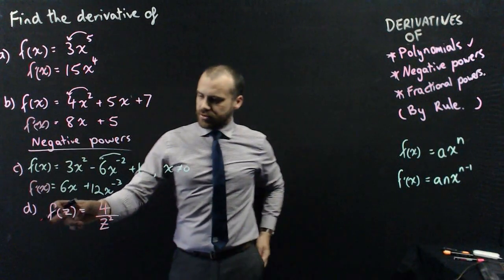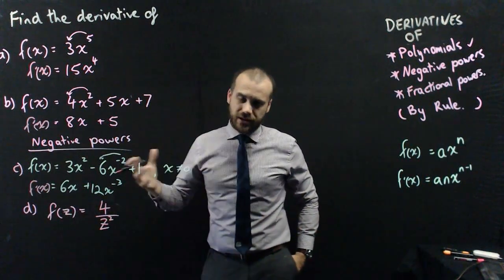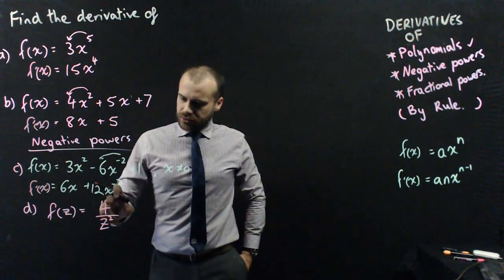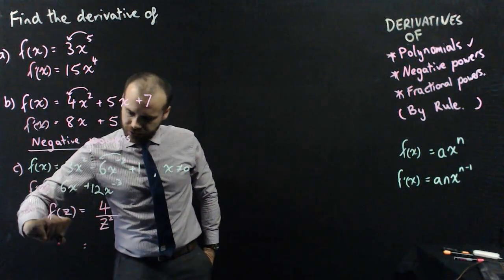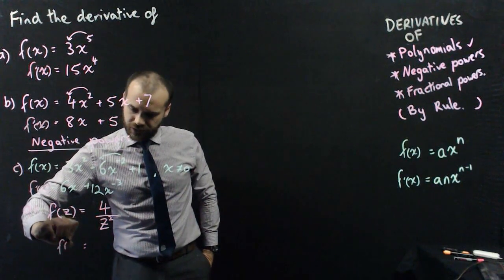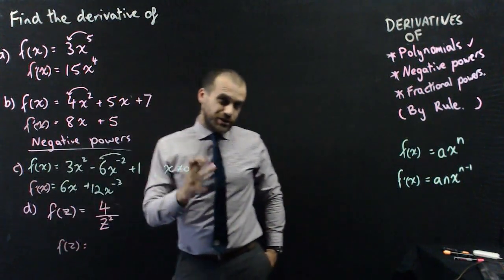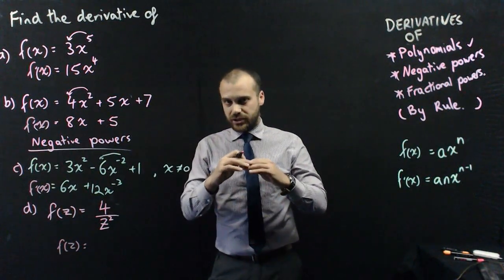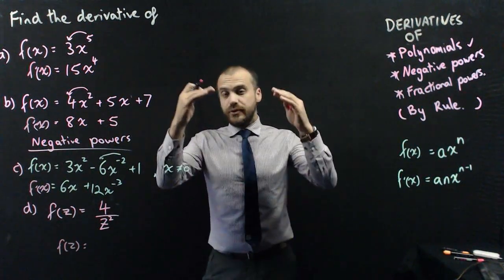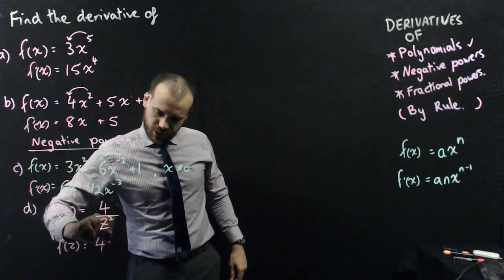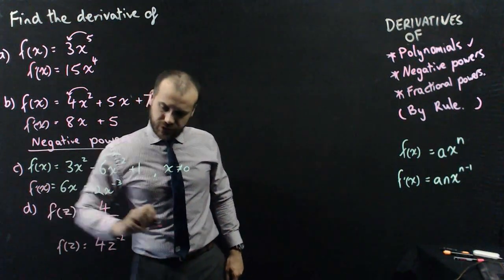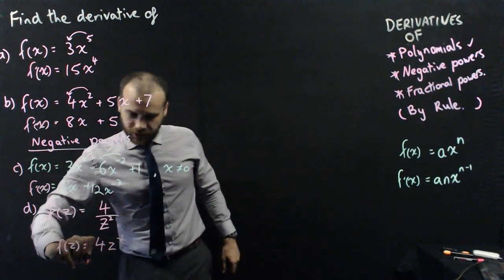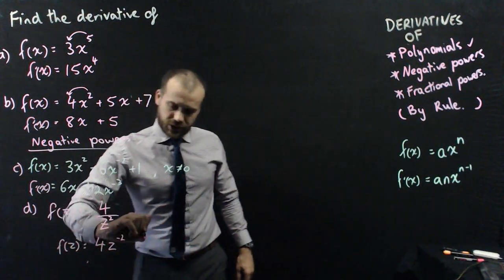This next one here, it says a function of z. You could say a function of x, y, k, you're allowed to have a function of anything, is equal to 4 on z squared. Now the derivative of that, I'm not going to do the derivative yet. I'm just going to rearrange it a little bit. Because I can't deal with things that are on the bottom of fractions. I don't know how. But I can move them to the top. So I can say that that's the same as 4z to the negative 2.